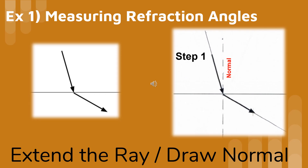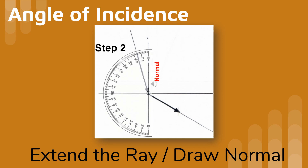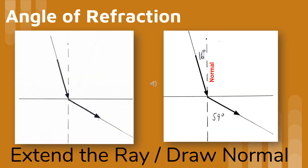Now we are going to talk about measuring refraction angles. The picture on the left shows a light ray bending as it crosses over to another medium. In order to measure the angles of incidence and refraction, we need to lengthen each of the rays with a pencil and draw in a dotted line perpendicular to the boundary between medium 1 and medium 2. To measure the angle of incidence, we point the curve of the protractor toward the ray, the zero line on the normal, and the center of the protractor where the ray hits the surface.